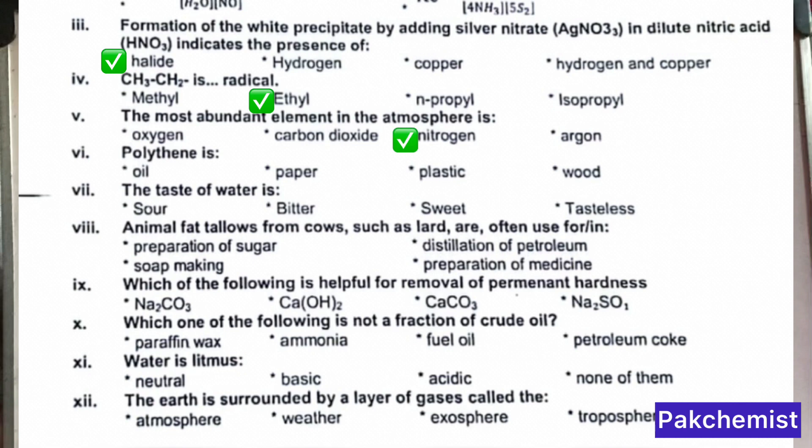Nitrogen is more than 75% of the atmosphere. MCQ 6: What is polythene? Polythene is a plastic. MCQ 7: What is the taste of water? Water is of course tasteless.